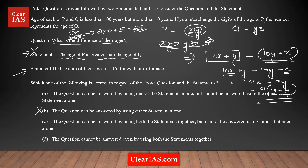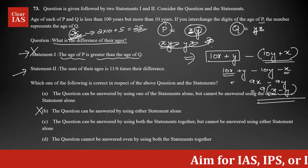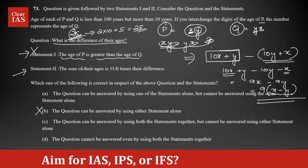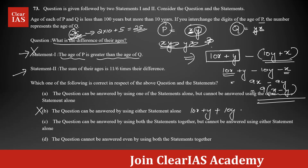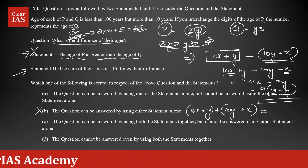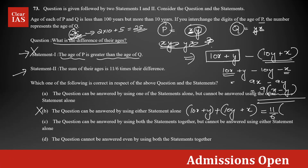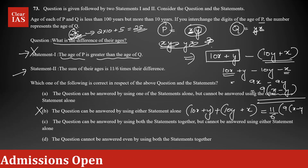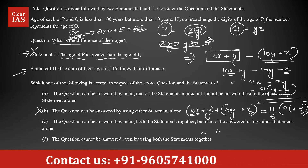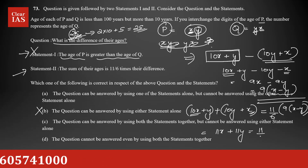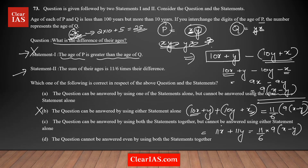Now analyzing Statement 2 alone: the sum of the ages equals (11/6) times the difference. The sum of ages is (10x + y) + (10y + x) = 11x + 11y. The difference is 9(x − y). So the equation is 11x + 11y = (11/6) × 9(x − y). Cancelling 11 from both sides and simplifying, 9/6 reduces to 3/2, then cross-multiplying by 2 gives 2x + 2y = 3(x − y).